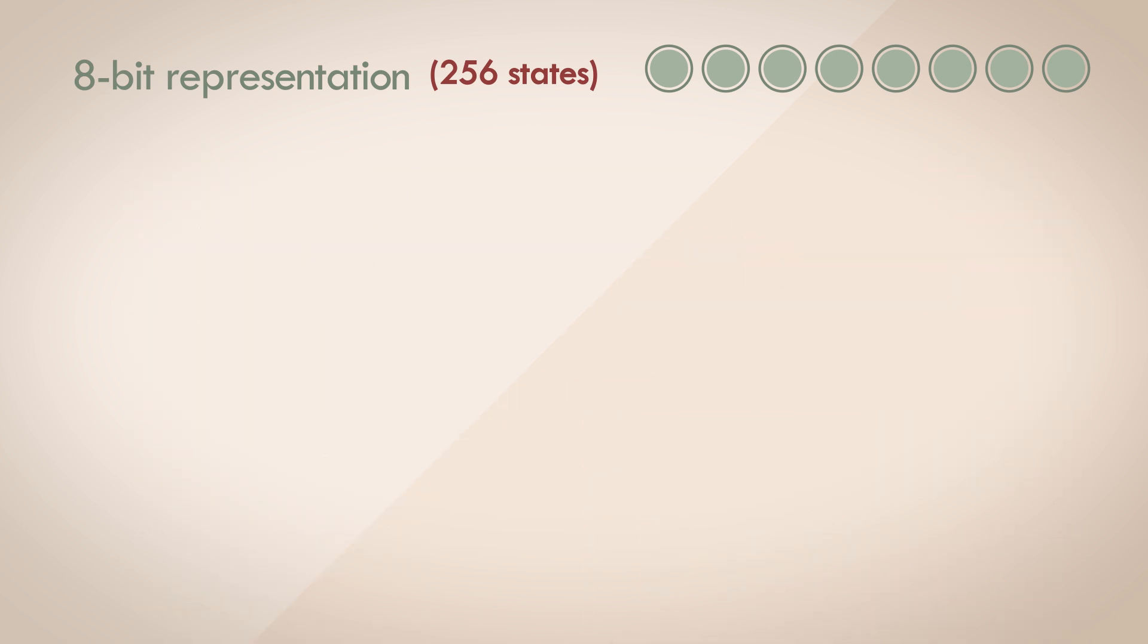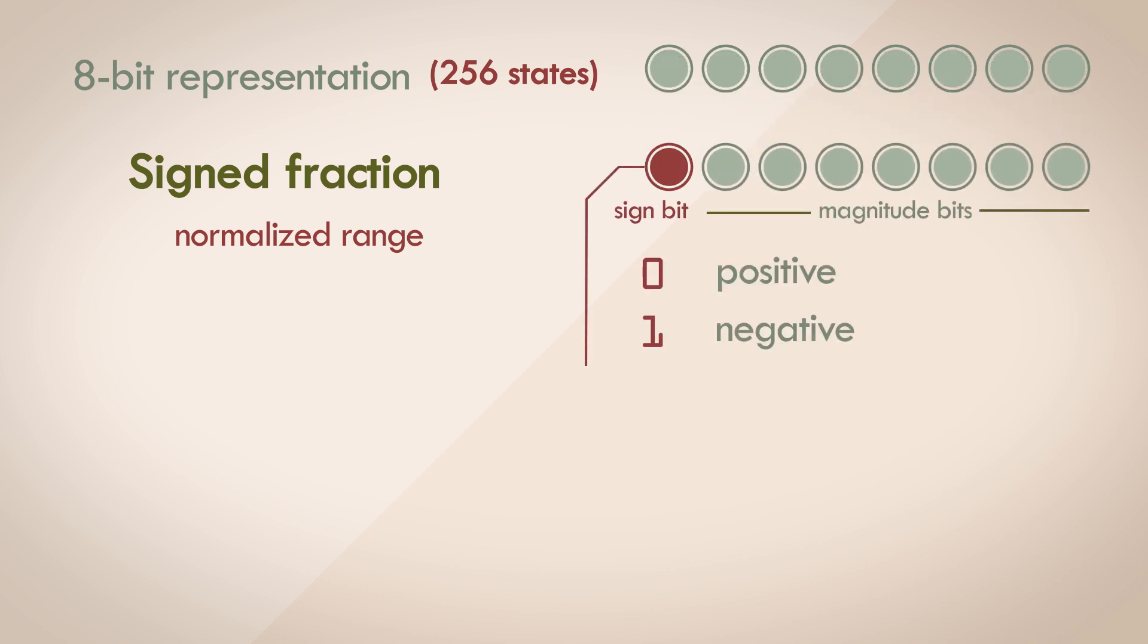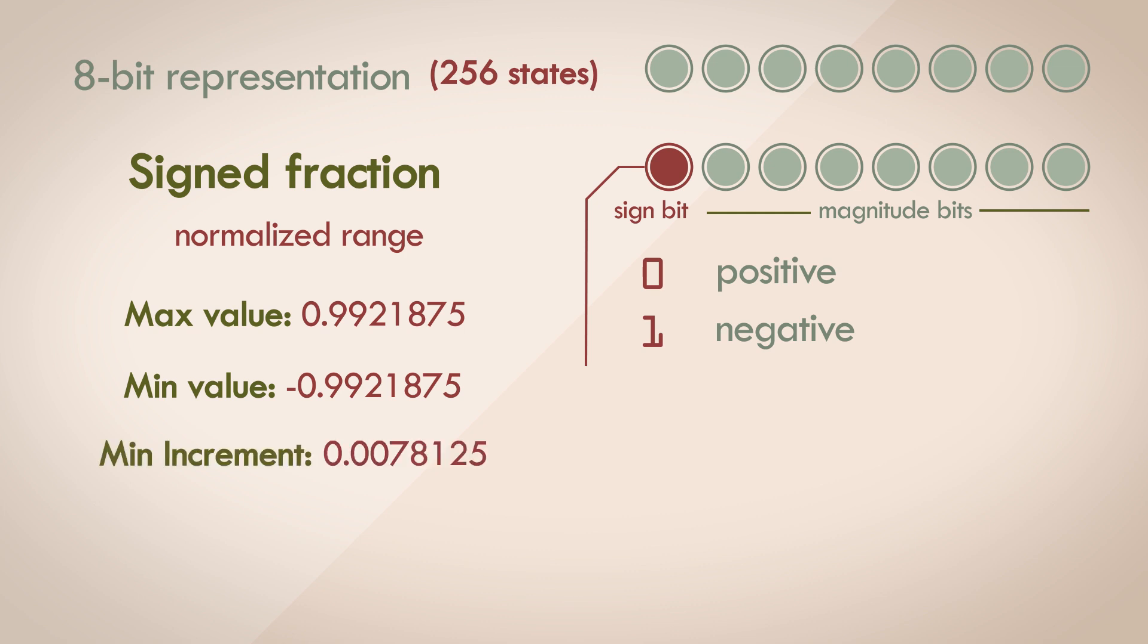Another representation model is to normalize the range and represent values between positive 1 and negative 1. So all numbers would be fractional in this case. Going with the same route as above, sacrificing 1 bit for sign, we can represent a range of values from 0.9921875 to negative 0.9921875, with a constant difference between two consecutive numbers being 0.0078125.